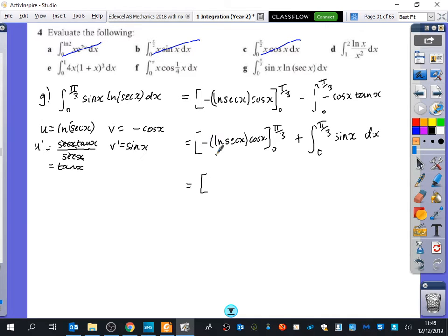So actually minus ln of sec x is the same as the ln of sec x to the power of minus one, which is ln of one over sec x, which is ln of cos x. So actually minus ln sec x is ln cos x. I think that's going to make the substitution a little bit easier.